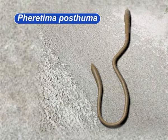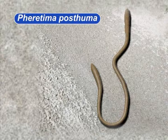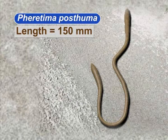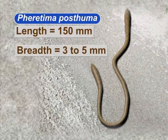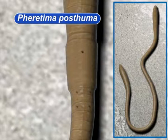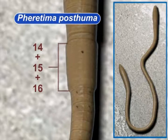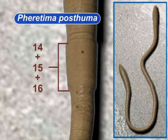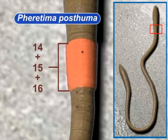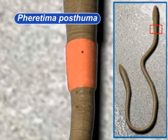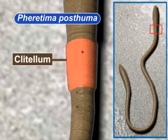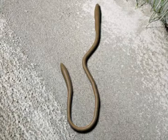The length of the body of a mature earthworm is about 150 mm and the breadth is 3–5 mm. In a mature earthworm, the 14th, 15th and 16th segments do not show any segmentation, and the region is surrounded by a thick and distinct band of glandular tissue. This portion is known as the clitellum. The clitellum divides the body of the worm into three regions.